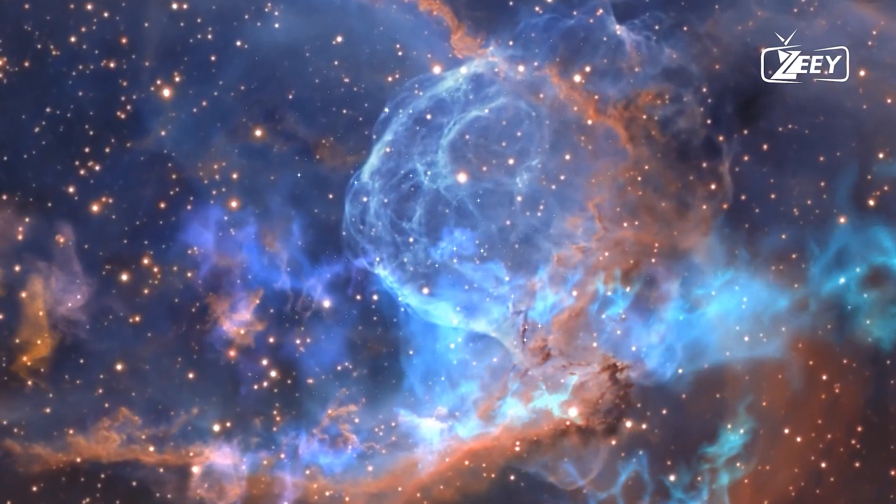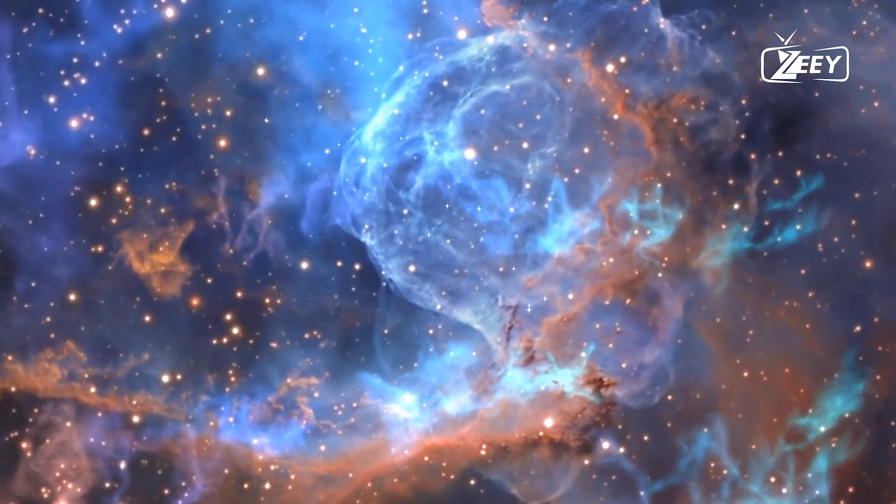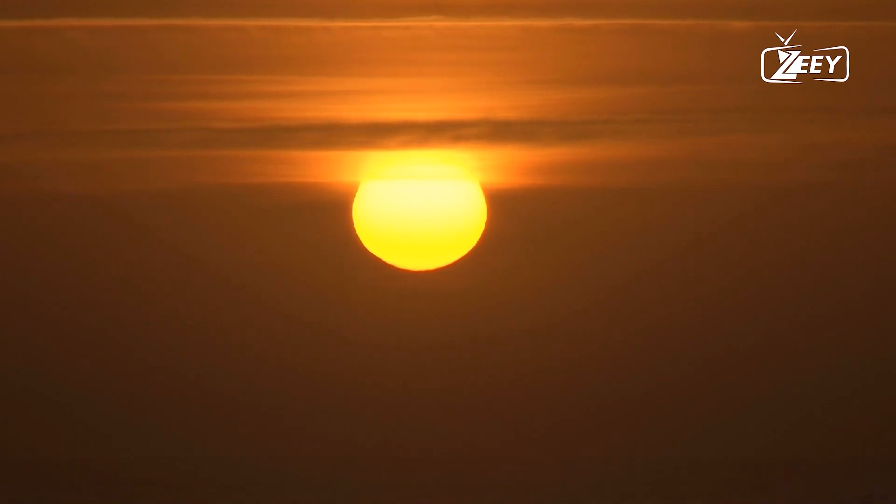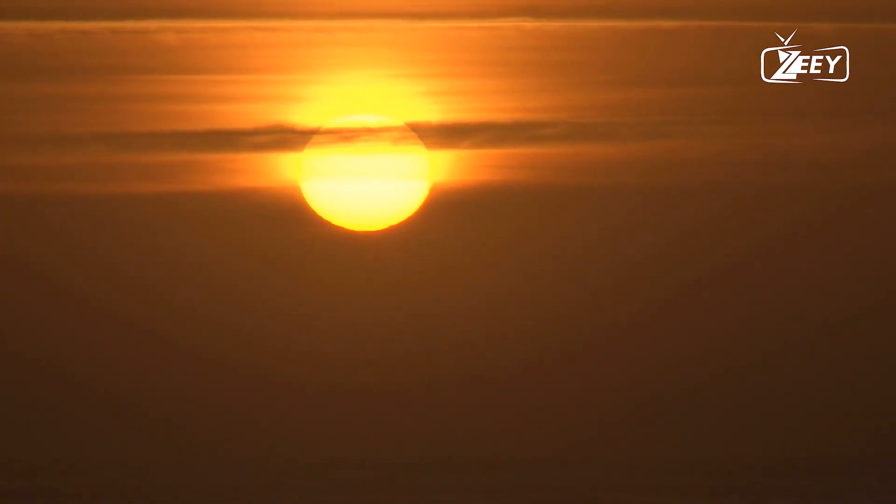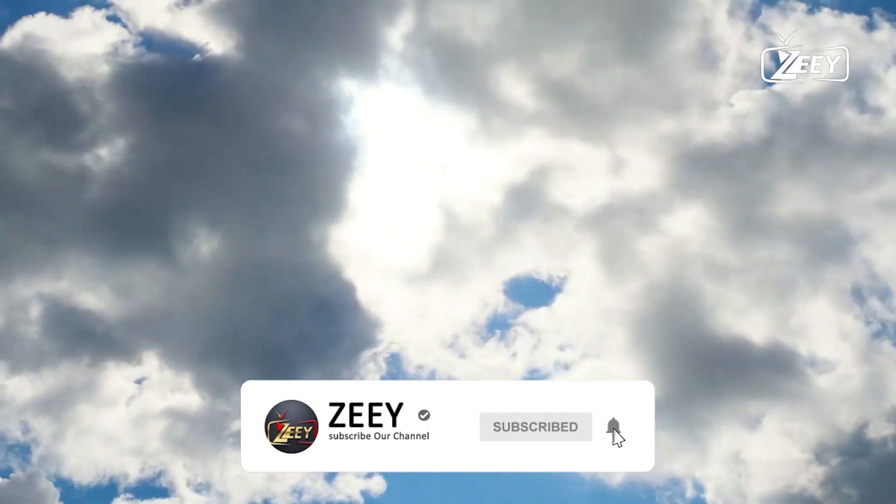Betelgeuse began to drastically dim in 2019, raising the possibility that the star may have reached the end of its life. Astronomers agree that the supernova will occur during the day and will be visible as a bright light in the sky, comparable to a full moon that casts shadows at night. Betelgeuse is approximately 724 light-years away, well outside the supernova kill range of 30 to 50 light-years, so there's no need to fear about this supernova wiping out life on Earth.